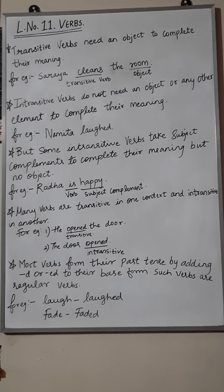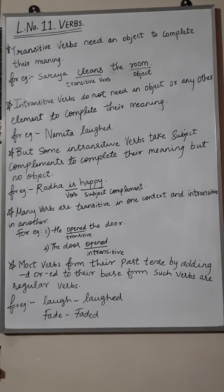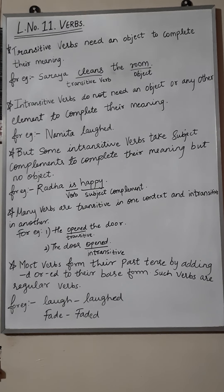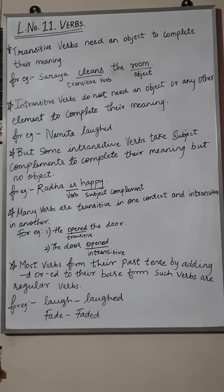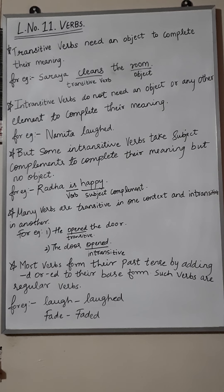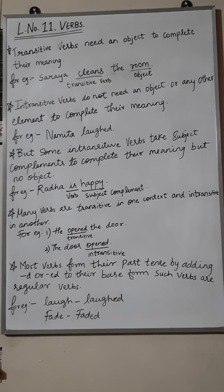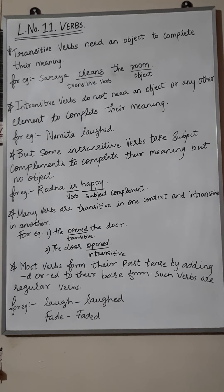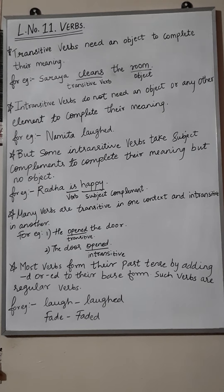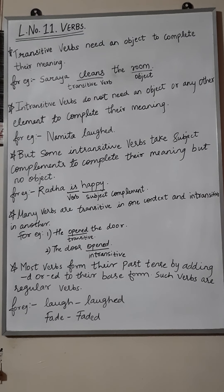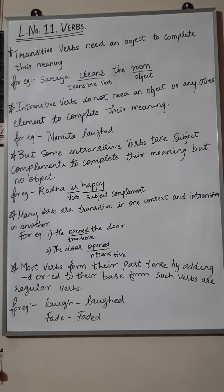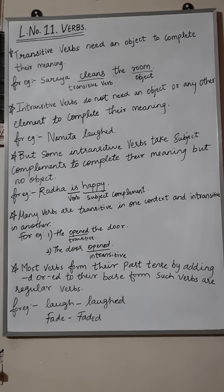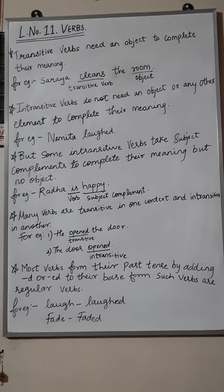Some intransitive verbs take a subject complement to complete their meaning, but no object. For example, 'Radha is happy' — 'is' is the verb and 'happy' is the subject complement. Also, many verbs are transitive in one context and intransitive in another. For example, 'He opened the door' — 'opened' is transitive; 'The door opened' — 'opened' is intransitive.